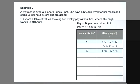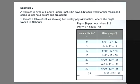For 10 hours, she'll make $48. For 15 hours, she'll make $78. For 20, she'll make $108. For 25 hours, she'll make $138. For 30 hours, she'll make $168. For 35 hours, she'll make $198. And for 40 hours, she'll make $228.